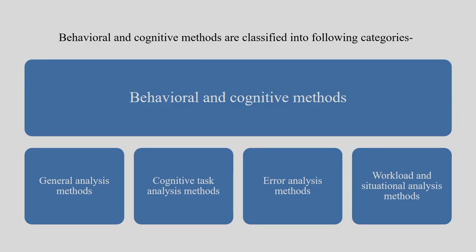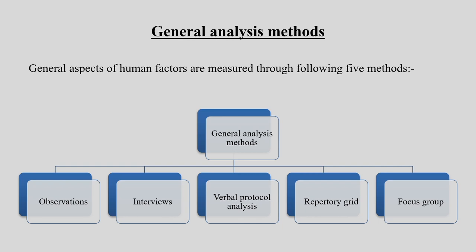Cognitive task analysis method — if you have a prior study or pilot study from where you have a lead, you can start directly from cognitive task analysis. It is nowhere restricted that you cannot start with workload and situational analysis method if that is the requirement of your study. But the baby step is: start with general, then go for cognitive task analysis, error analysis, and then workload and situation analysis. Under general analysis method, we have observation, interviews, verbal protocol, repertory grid, and focus group.